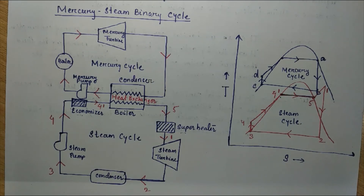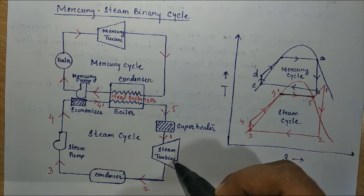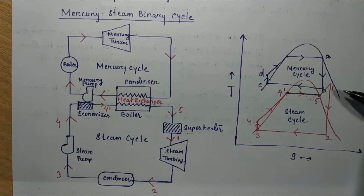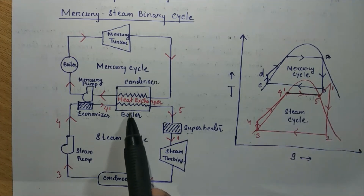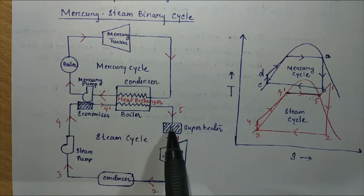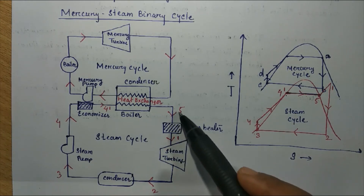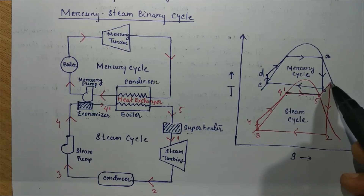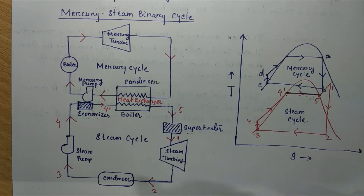In the form of superheated state, the steam enters the steam turbine, as clearly shown in the T-S diagram. The steam enters the superheater as saturated steam and as it is heated again it becomes superheated steam, with state 5 becoming state 1. The superheated steam then enters the steam turbine, performs some work, and then enters the condenser where condensation takes place at constant pressure.